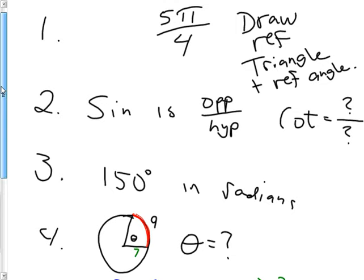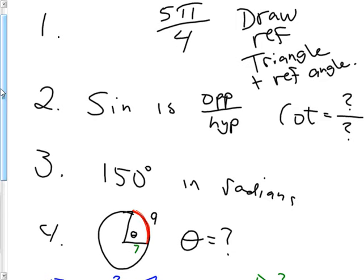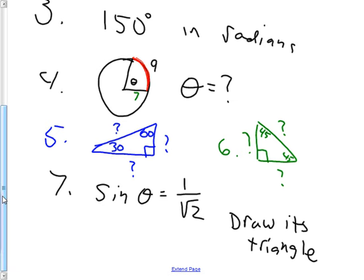Number two: if sine is opposite over hypotenuse, what is cotangent? If I had just asked you tangent, it would have been a no-brainer. So if you know that tangent and cotangent are sister functions, you should know what to do. Number three: 150 degrees can be converted to radians by multiplying by something. Number four: I've given you the radius, I've given you the arc length, and there's that little formula. Anybody remember it? S equals theta r. That little formula helps you to figure out what theta is here.